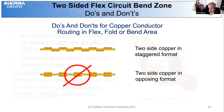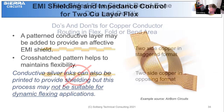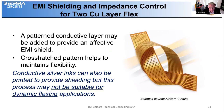In regard to EMI, we can provide shielding — it could be another layer of copper as a patterned conductive layer added to provide effective EMI shielding. The crosshatch pattern helps to maintain flexibility. Conductive silver inks can also be printed to provide shielding, but this process may not be suitable for dynamic flexing applications.